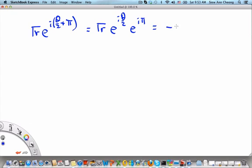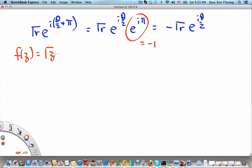In fact, you can write √r × e^(i(θ/2 + π)) as √r × e^(iθ/2) × e^(iπ), which is equal to -√r × e^(iθ/2), because e^(iπ) equals -1. Therefore, the function f(z) = √z is considered multi-valued.